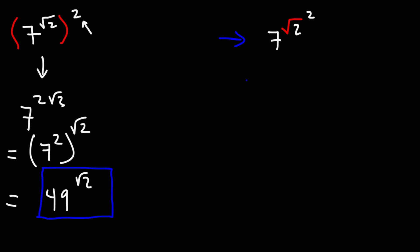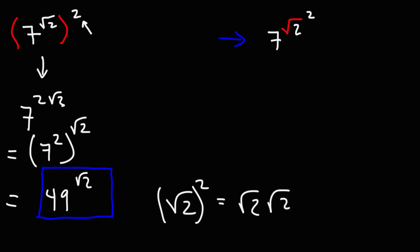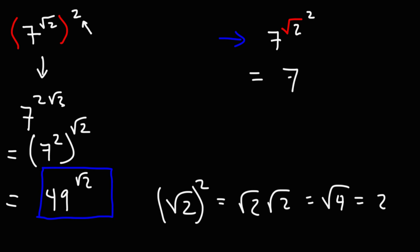Now, what about the version without parentheses? The 2 does not apply to the 7; it only applies to the square root of 2. The square root of 2 squared means multiplying two square root 2's: √2 times √2 is √4, and the square root of 4 is 2. So this entire exponent simplifies to 2, giving us 7 squared, which is 49. So the two expressions give different answers.